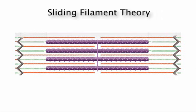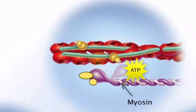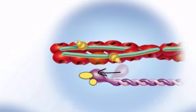First off, the myosin head must have an ATP molecule bound to it to initiate contraction. The enzyme myosin ATPase hydrolyzes this ATP into ADP and phosphate. The energy released by this process activates the head, which cocks into an extended, high-energy position.